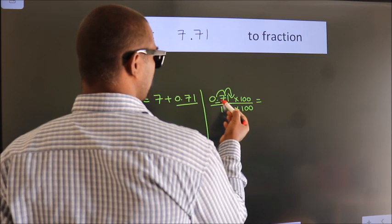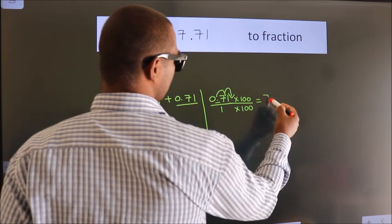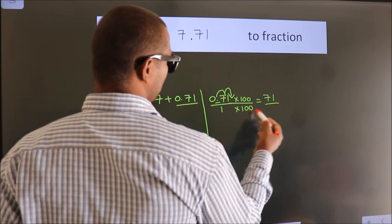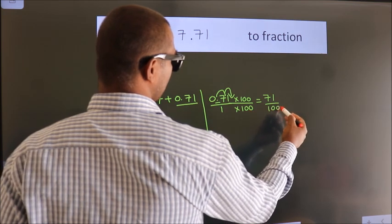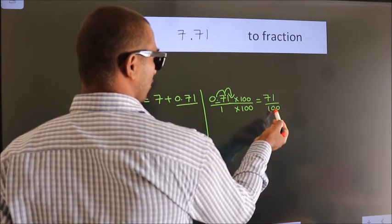0.71 times 100 is 71. 1 times 100 is 100. This is the fraction we got.